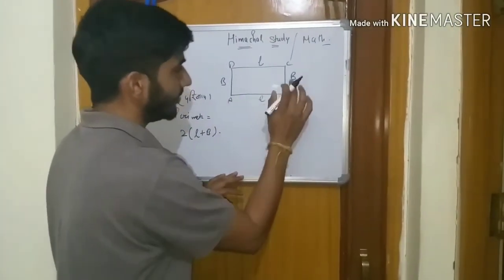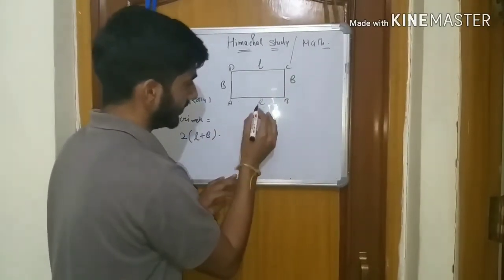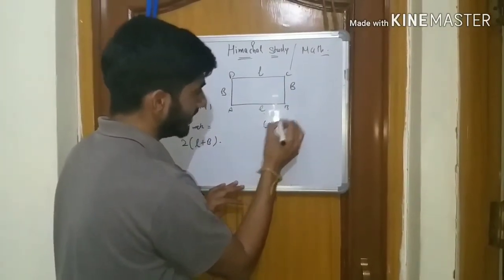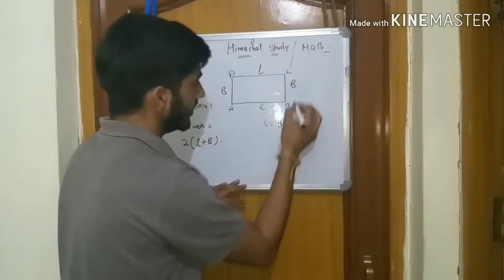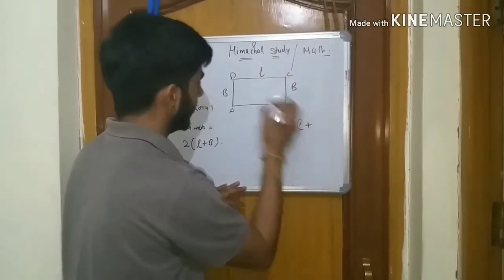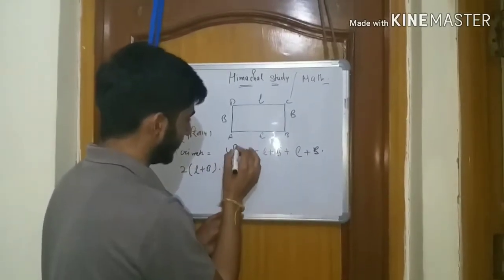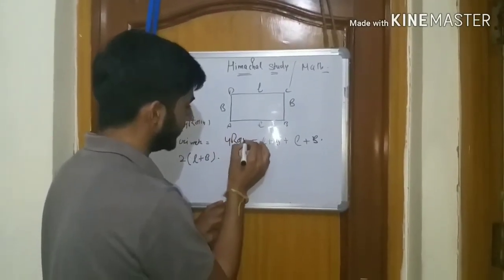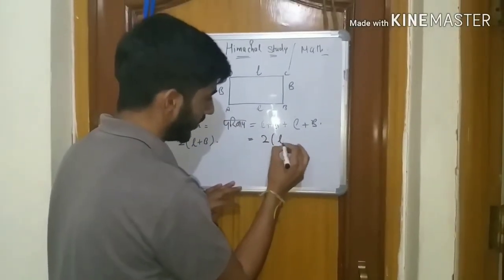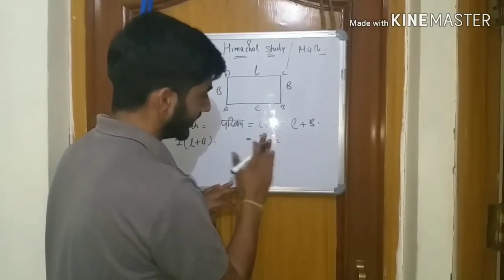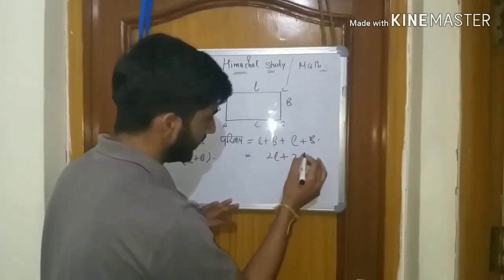The boundary is AB plus BC plus CD plus DA. AB is L, BC is B, CD is L, DA is B. So the perimeter comes out to 2L plus 2B.